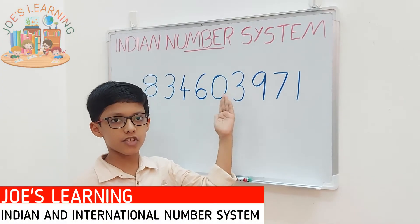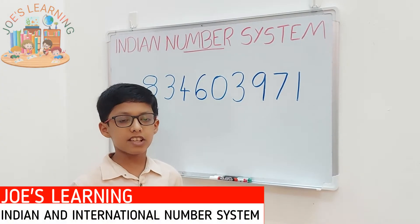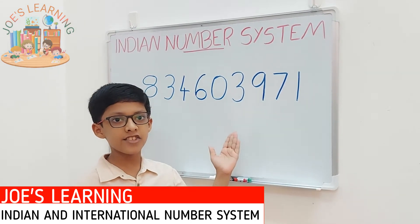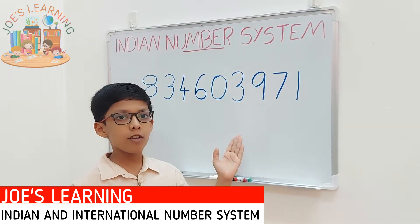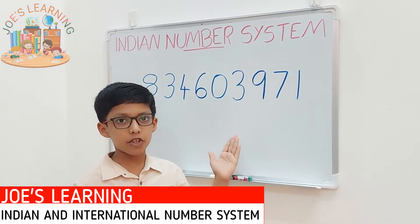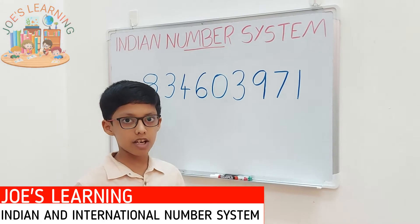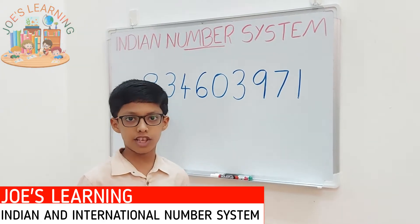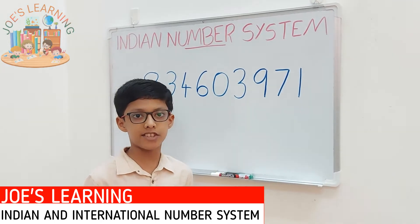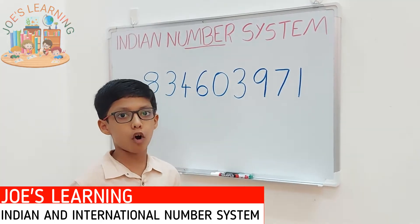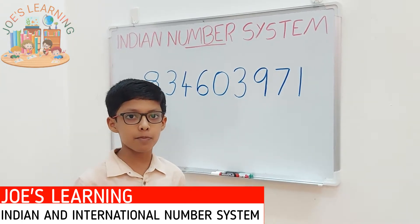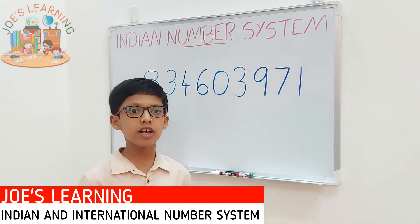First let's move on to the Indian number system. To make this clear, let's do some examples. The first example is the number 46,971. This number is very difficult to read, so to make it easier we put commas in it, because commas act as a separator to separate the periods of a number.